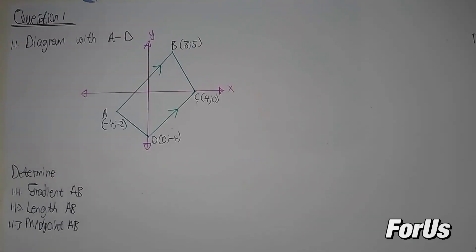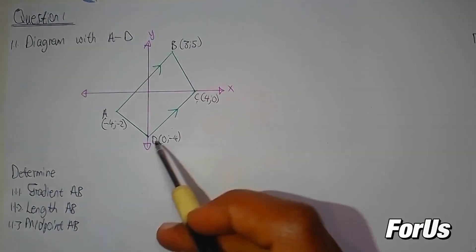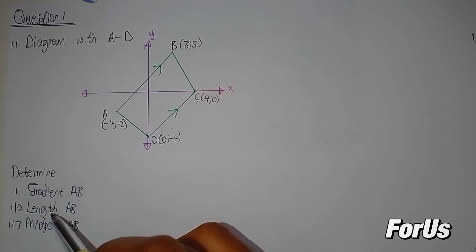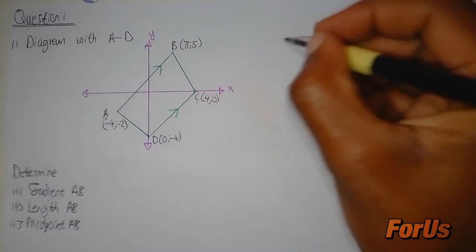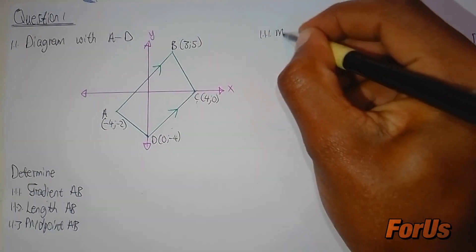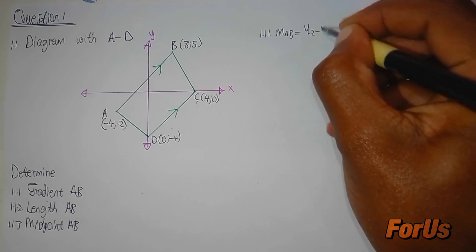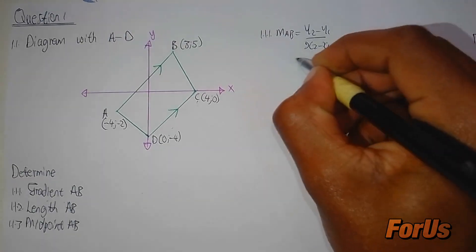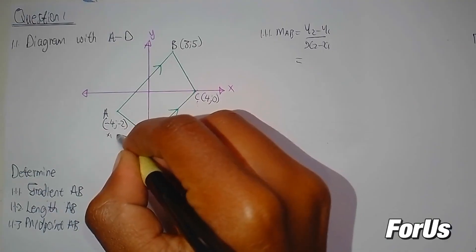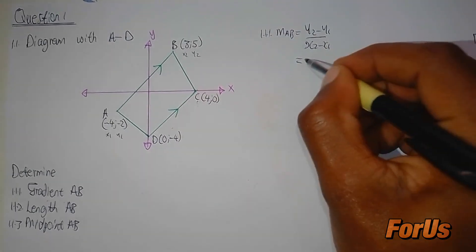Question 1.1 shows a diagram with points A to D as coordinates. Question 1.1.1 asks us to determine the gradient AB. The gradient AB formula is y2 minus y1 divided by x2 minus x1. Let's label the coordinates as x1, y1 and x2, y2.